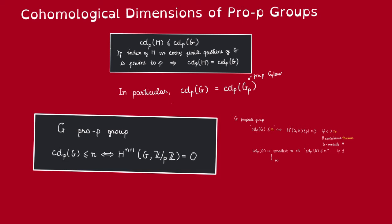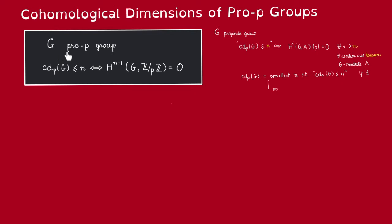Thus, in this video, we're going to compute the cohomological dimension of pro-p groups. So let G be a pro-p group. We claim that to check that this cohomological dimension is less than or equal to n, we do not need to check this for all i greater than n — we only need to check for n plus 1. And we don't need to look at all continuous torsion in a module; we only need to look at Z/pZ. So let's see why.